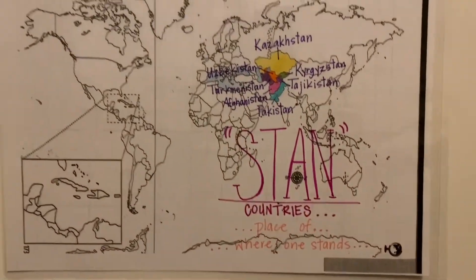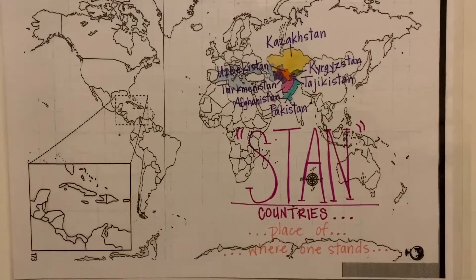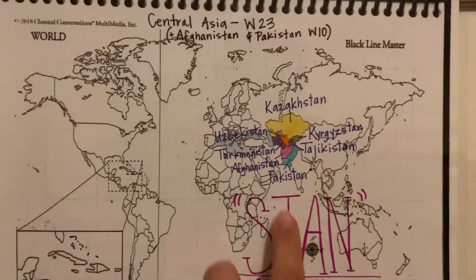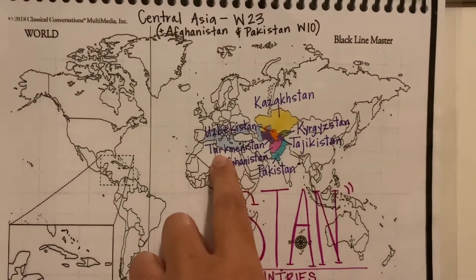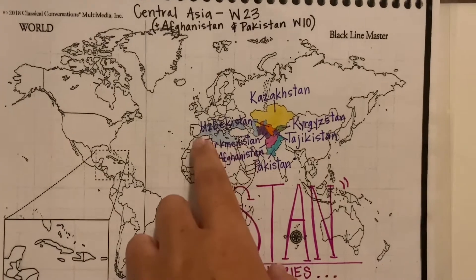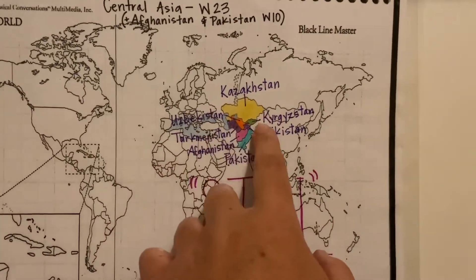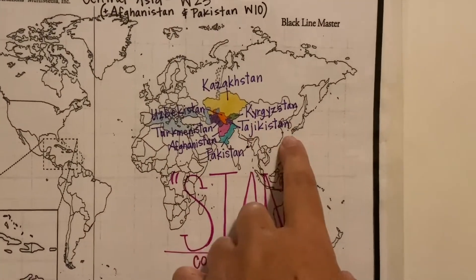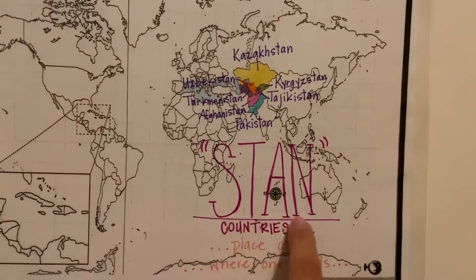I think this is so cool. All of these countries — Pakistan, Afghanistan, Turkmenistan, Uzbekistan, Kazakhstan, Kyrgyzstan, and Tajikistan — all end with Stan.